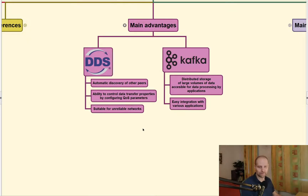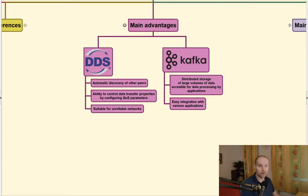What about the main advantages? I will summarize it like this. Because DDS can automatically discover other peers, you can have a zero-configuration setup of your system. DDS has the ability to control data transfer properties by configuring QoS parameters, so you can fine-tune performance and efficiency when you need it. And it's suitable over unreliable links. Kafka is a distributed storage of large volumes of data accessible for data processing by applications — and that is its advantage.